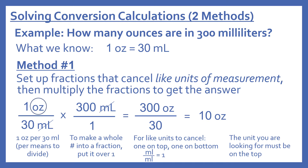Now we'll look at how we solve conversion calculations, and there are two methods we'll cover. The example here is: how many ounces are in 300 milliliters? What we know — from our memorized conversions — is that one ounce equals 30 milliliters. With method one, we'll set up fractions that cancel like units of measurement, and then multiply the fractions to get the answer.